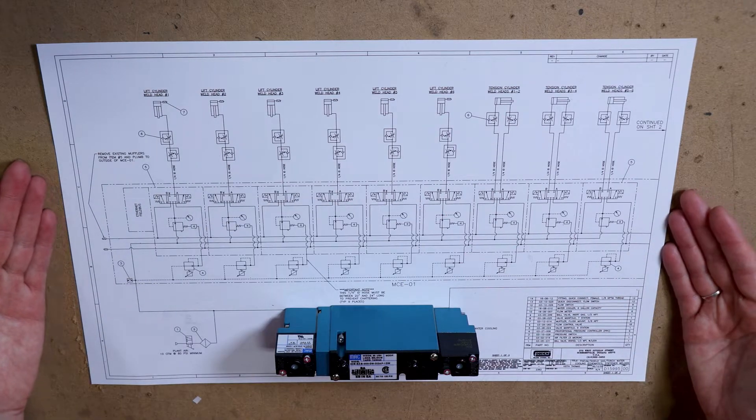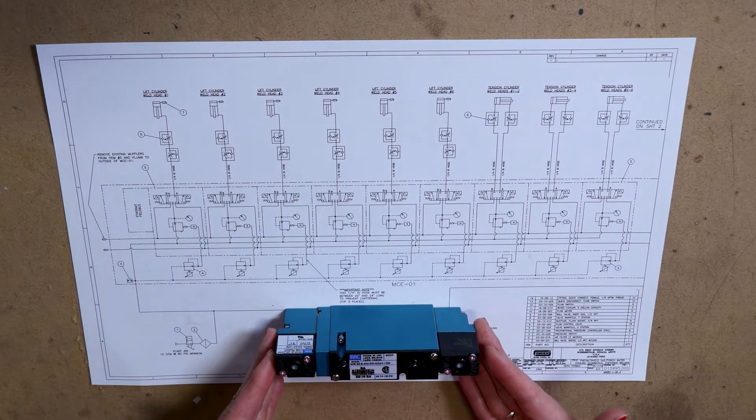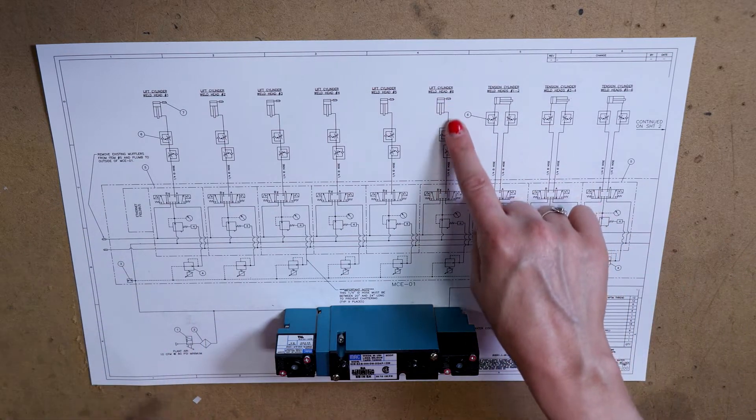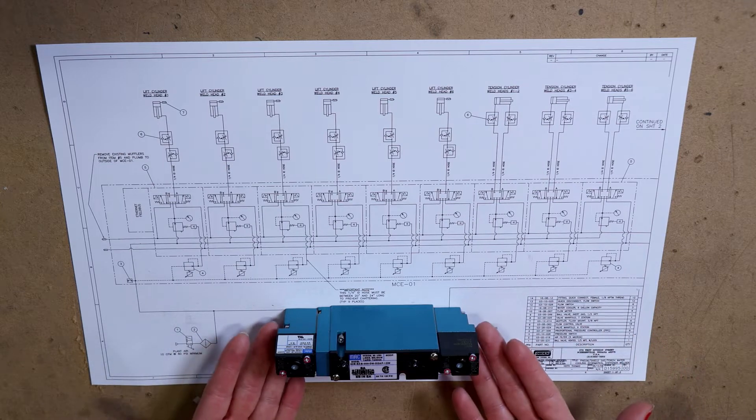This particular manifold stack has closed center valves so that when the manifold is de-energized, the cylinders cannot move back and forth. You could describe this as a type of insurance.